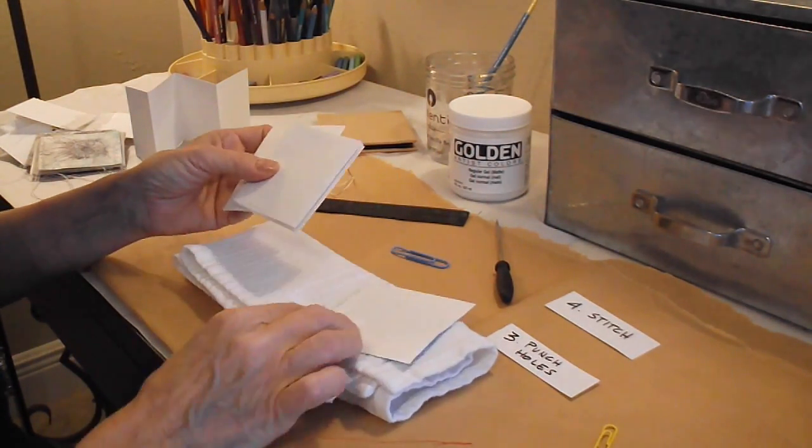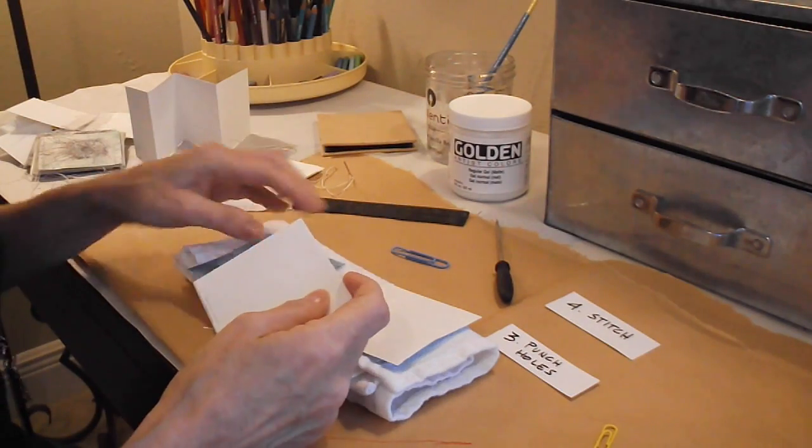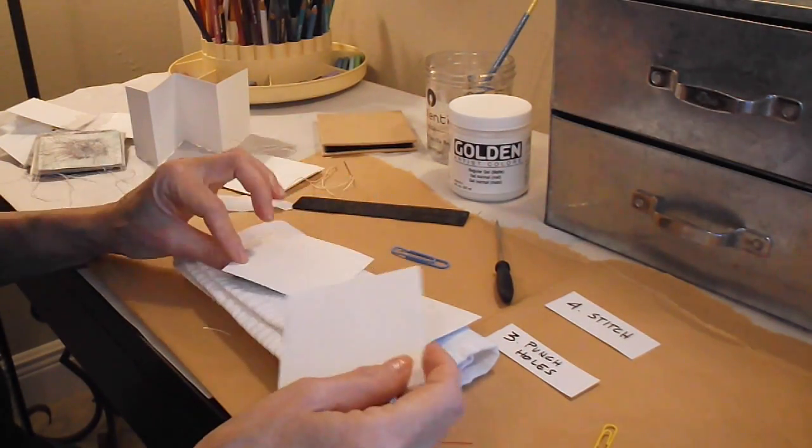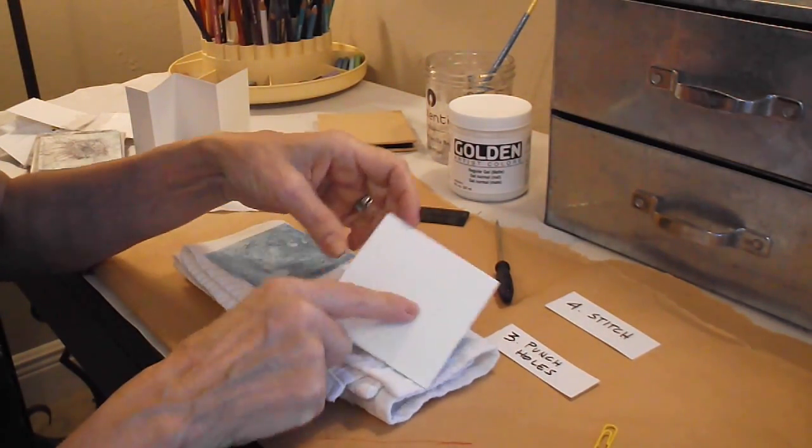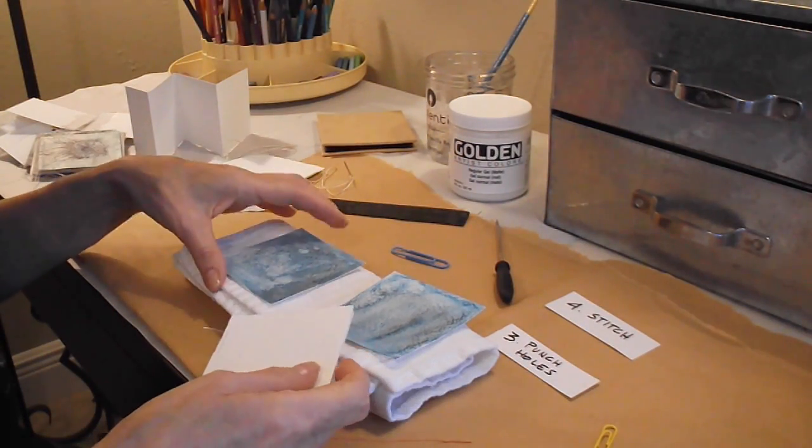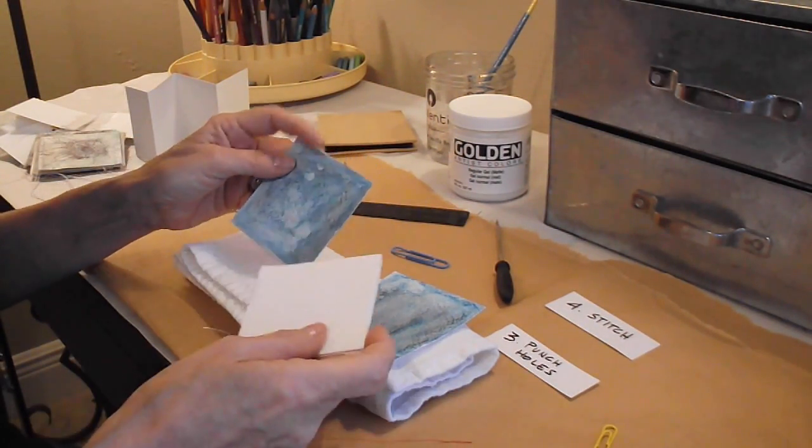I used watercolor paper. This is just to give you another idea of something else you can do. I used watercolor paper and I covered the outside and the back side with watercolor pencils. Just to show you the difference, if they were all white it would be hard to see.